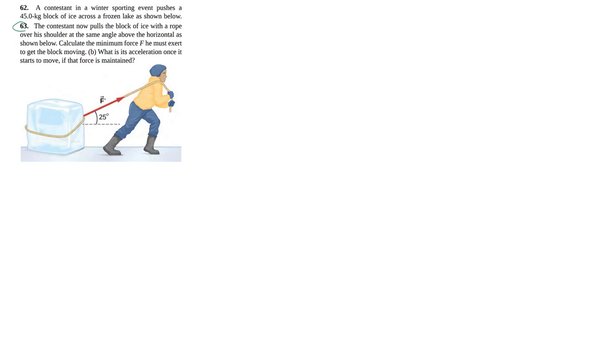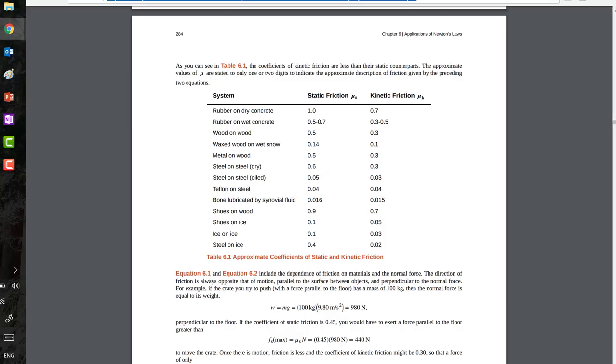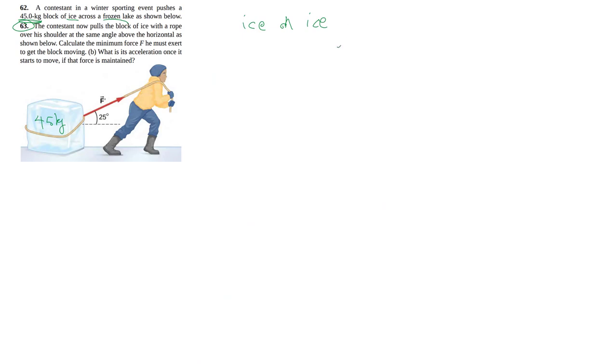We're just working on 63 here, but there's some data that we needed from 62, so I've included those few lines here. Basically, the things we need is we have a mass of 45 kg, and that we're talking about ice across a frozen lake. So when we talk about ice on ice, we have to look up the friction coefficients, and that's in table 6.1 in your textbook. We have ice on ice, we have static of 0.1 and kinetic of 0.03.